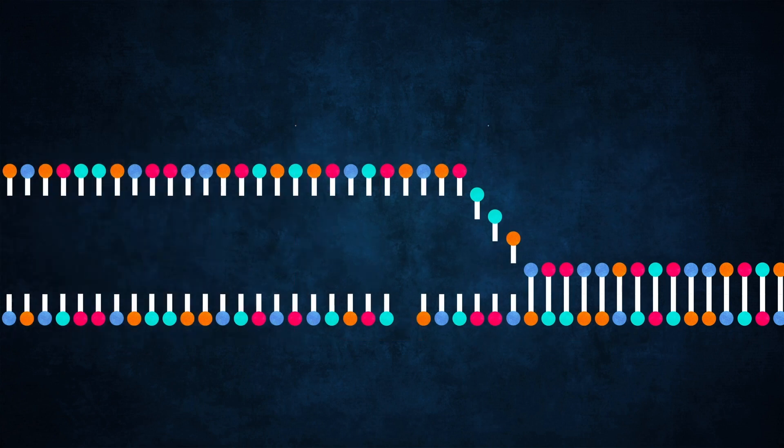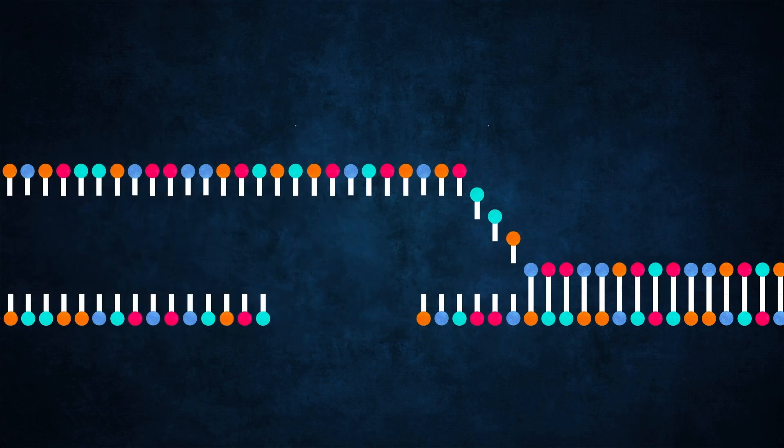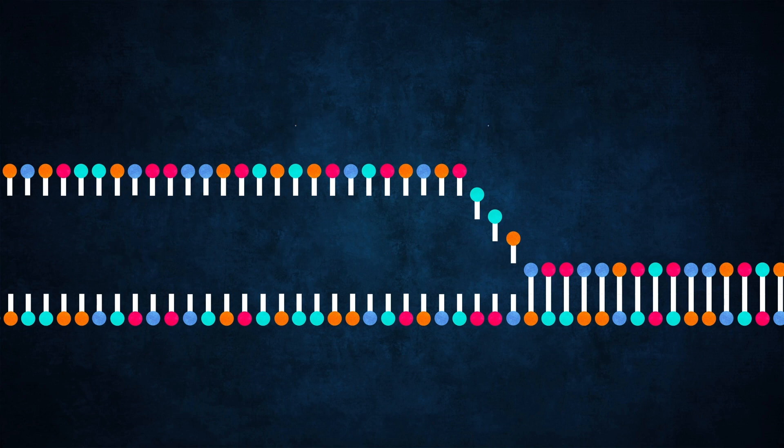However, genes can also be repaired by injecting another strand of DNA at the section where the split in the DNA was made, therefore editing the function of the gene. This is true genetic engineering and is far more complicated to do than simply knocking out a gene's function.